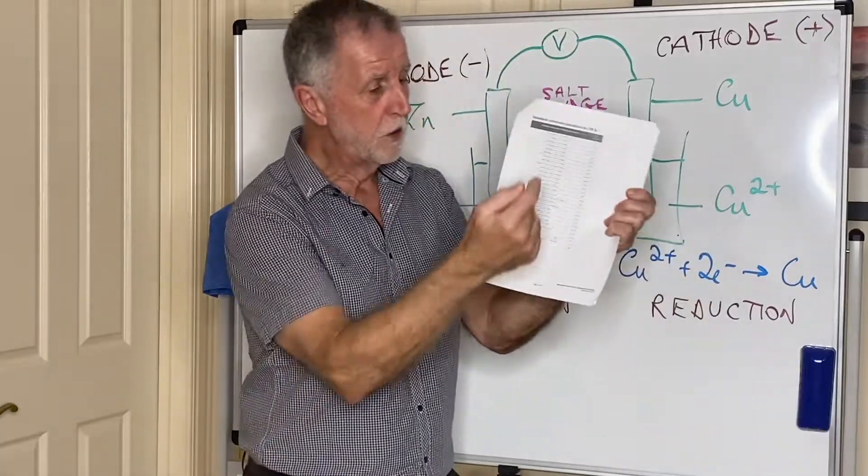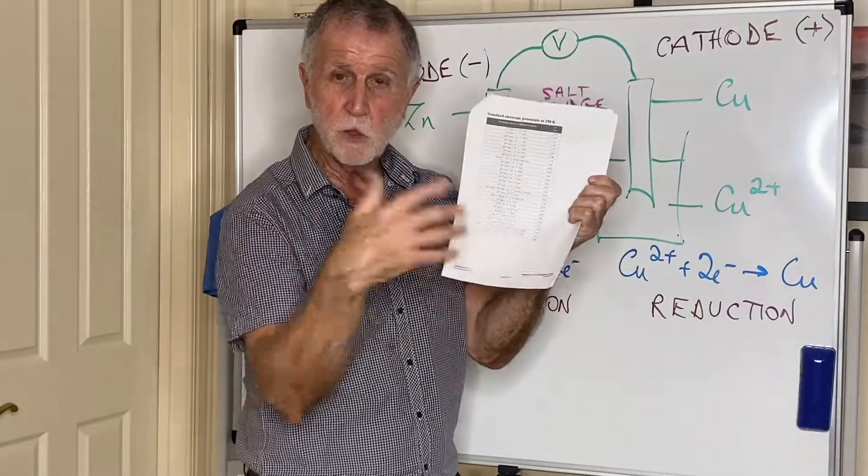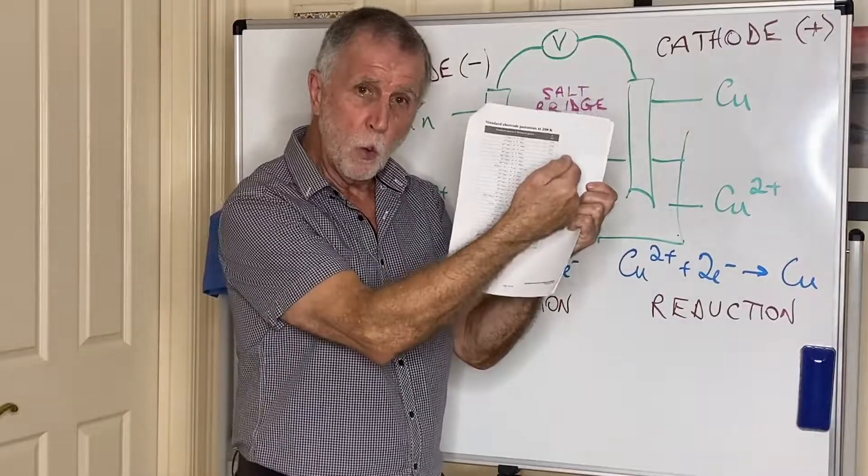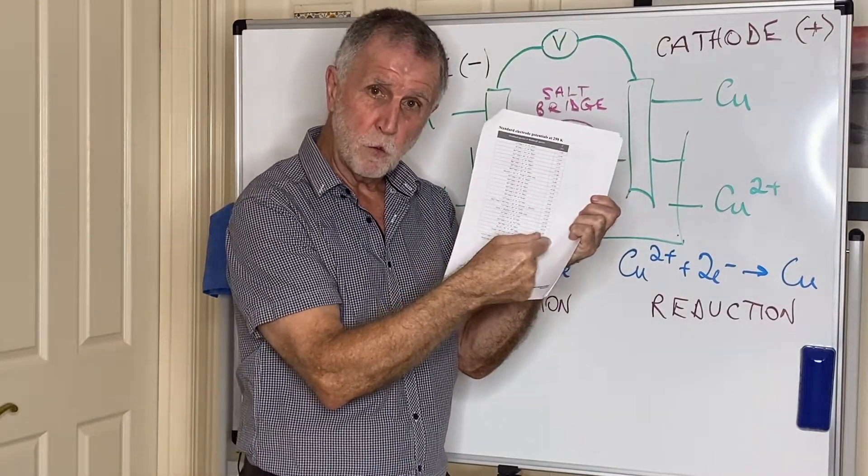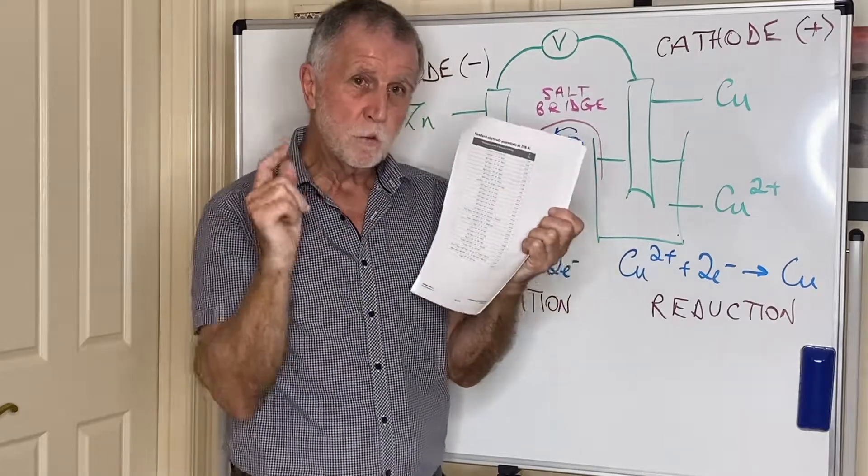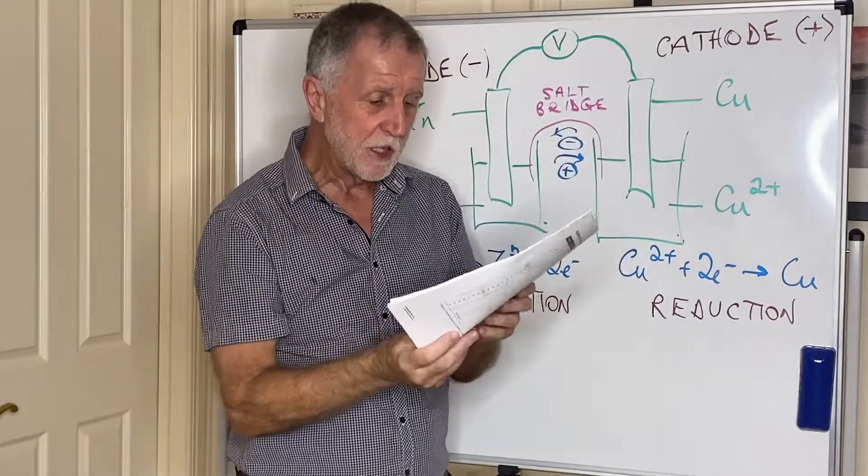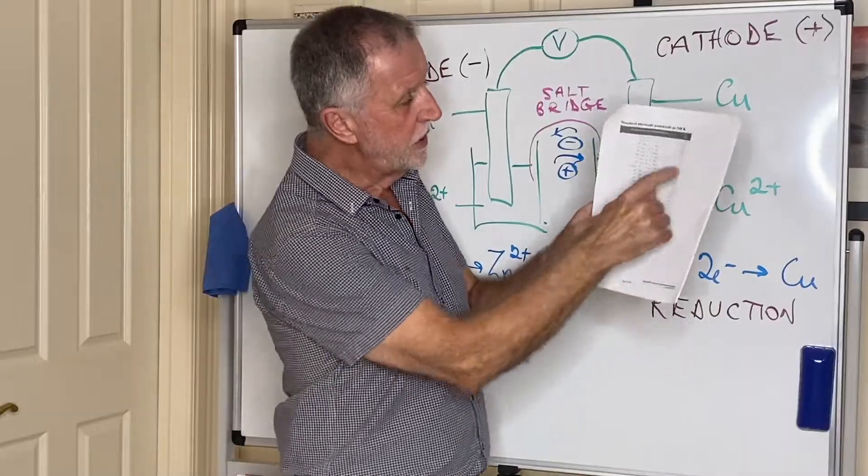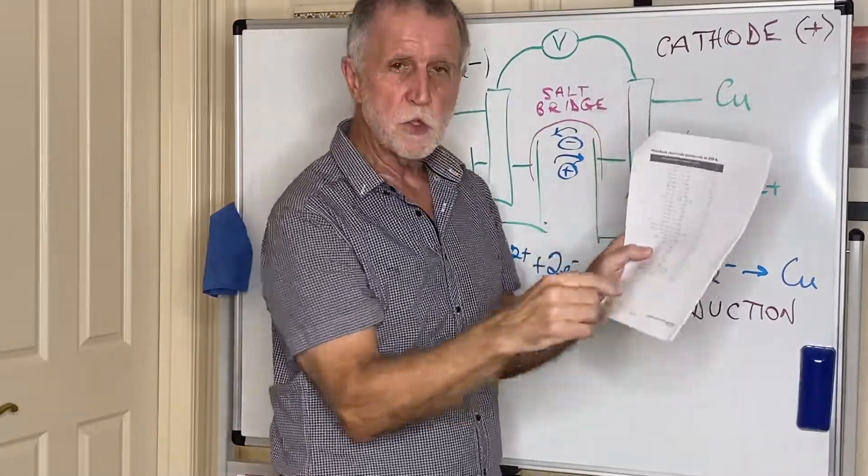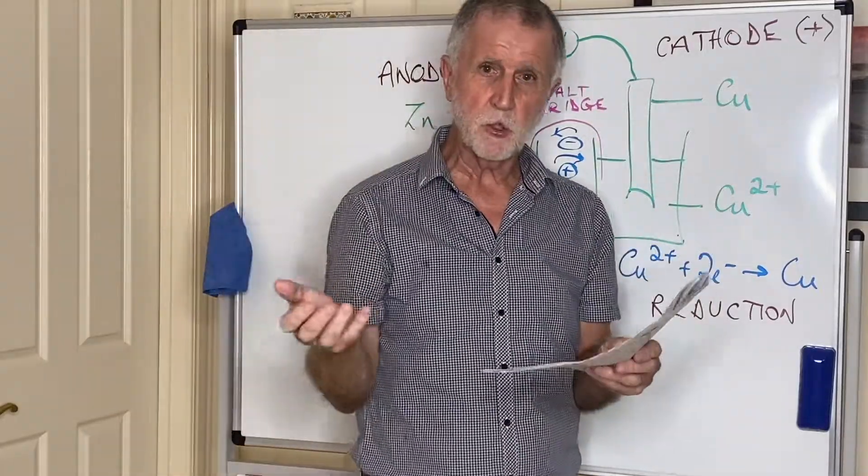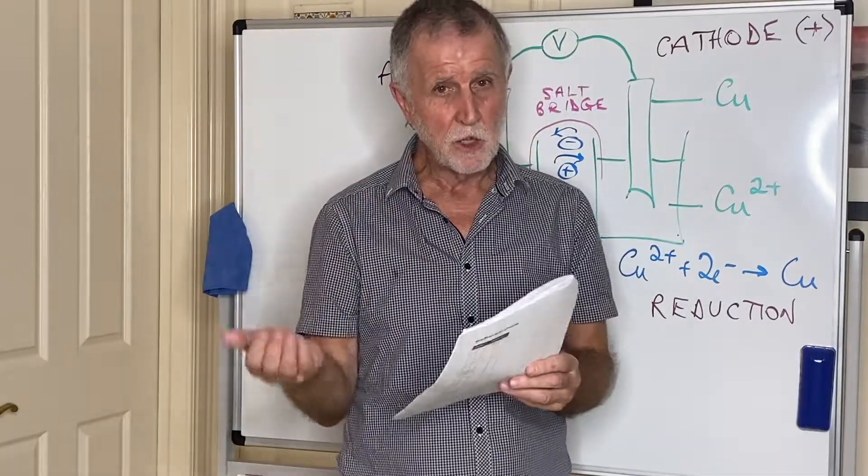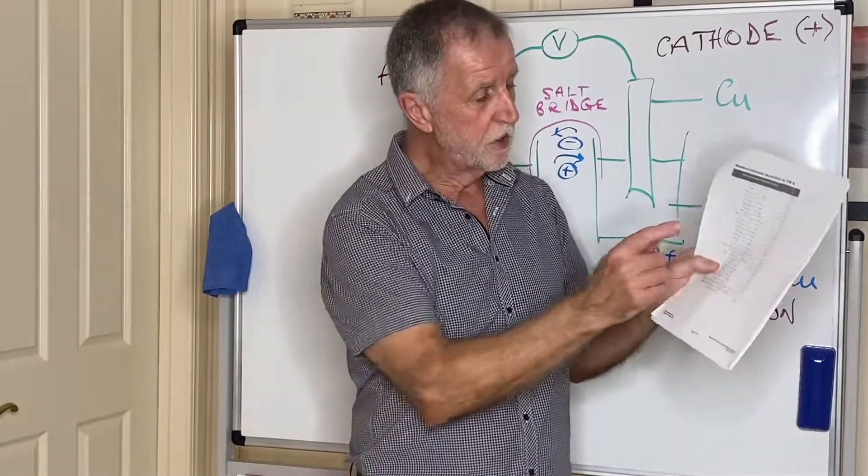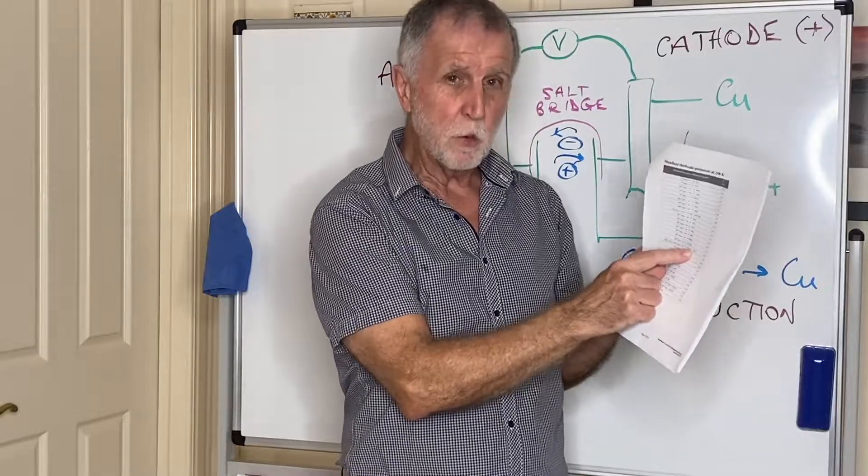So if you find the two half equations, whichever two they might be, the top one will always have to go backwards and the lower one will always have to go forwards. Now the reason for that is basically because these values down the right here, which are called standard electrode potentials, are with reference to a standard hydrogen electrode, which you will see in the chart has a value of zero volts. All of the other values are with respect to the hydrogen electrode.